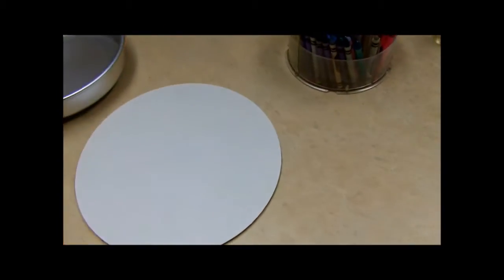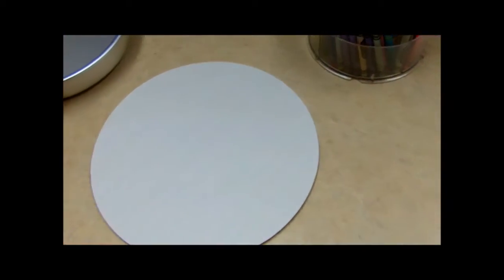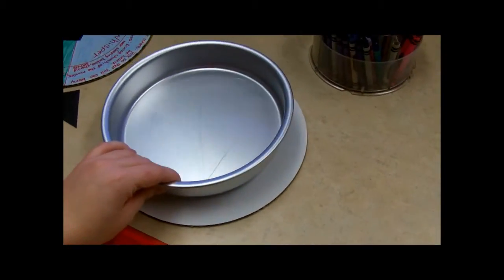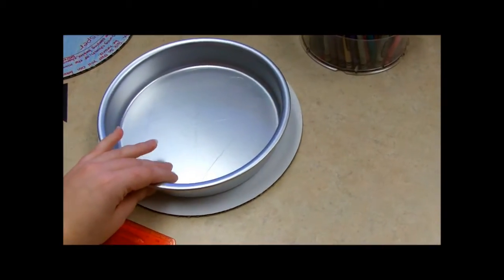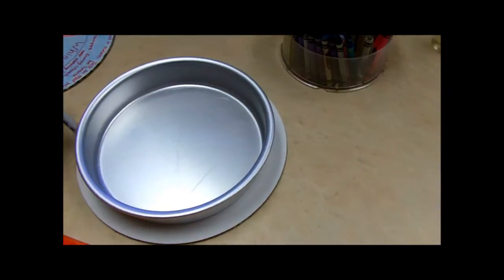So, I have a 10 inch cake round which is something you put underneath a tier of cake, just a piece of cardboard. You can make your own. I have an 8 inch cake pan and what I'm going to do is use this as a template just to trace a circle around here.